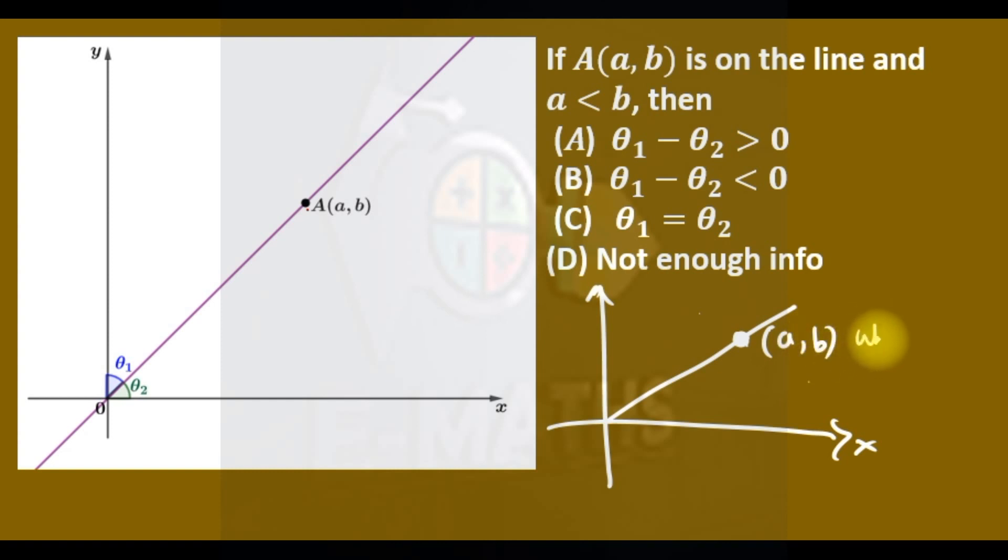Where a is equal to b, the angles here, if this is θ1 and this is θ2, at this point θ1 will be equal to θ2 because we have 45 degrees that are the same.